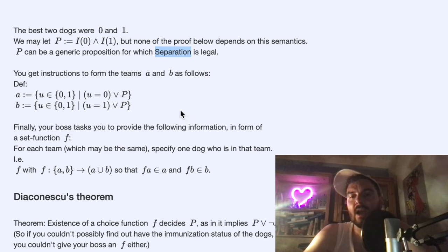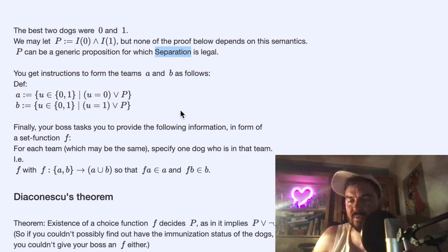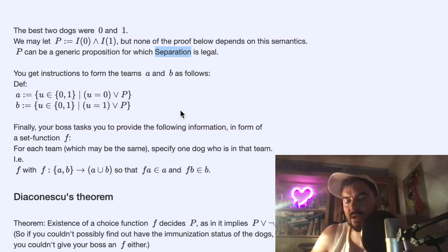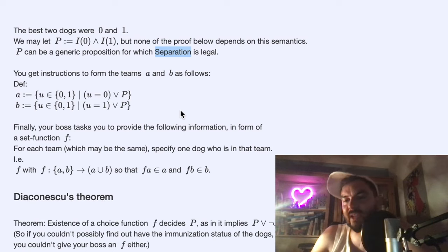Going away from the dog semantics: the theorem says if for every set of non-empty (inhabited) sets there exists a choice function, then this implies excluded middle. The proof is done exactly with these sets A and B. If you actually had a choice function — as a mathematical choice function in terms of pairs — and it has only two entries mapping A and B, then that means A and B cannot be the same, because if A and B were the same then by definition...